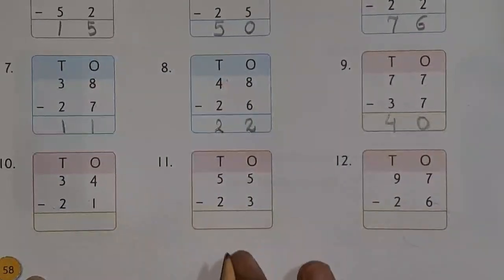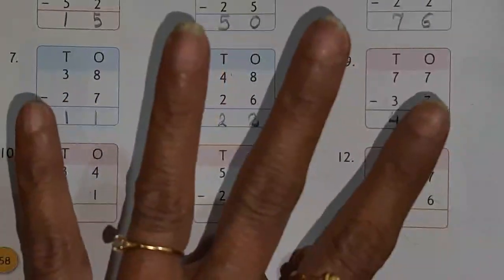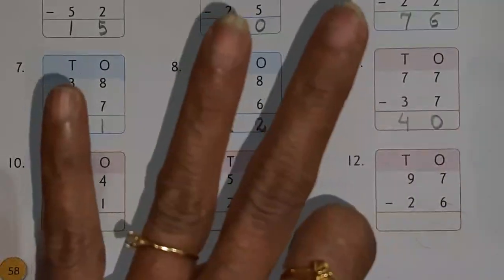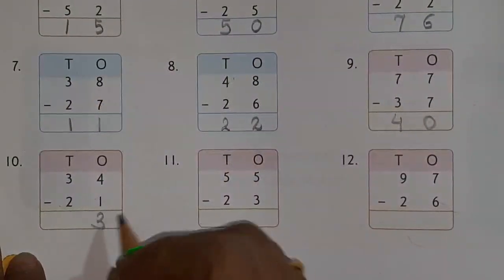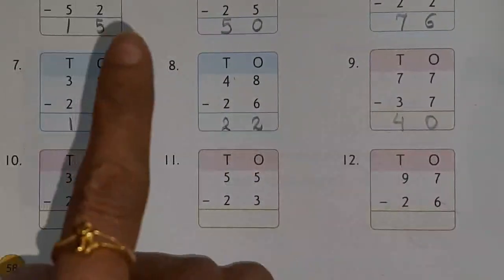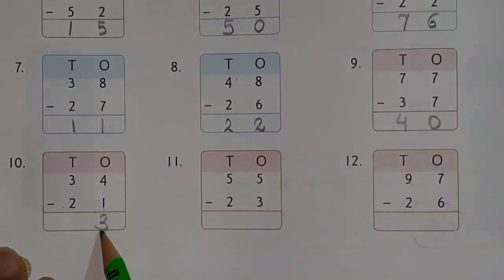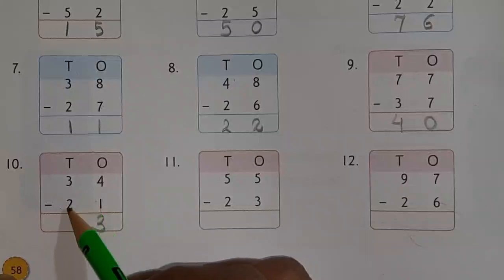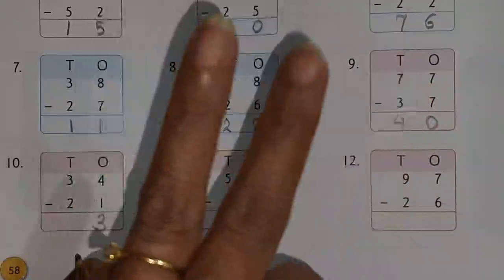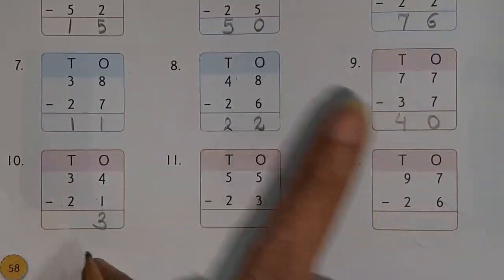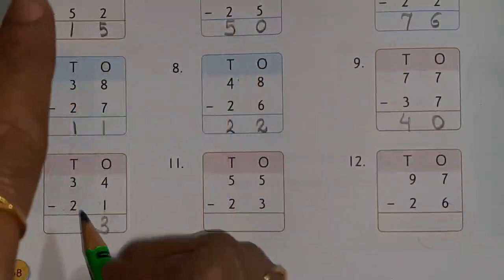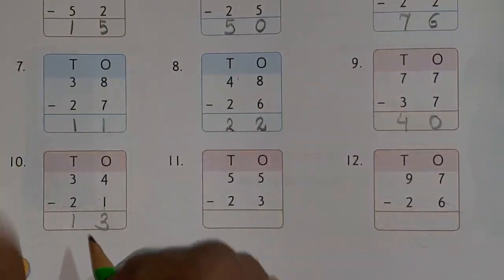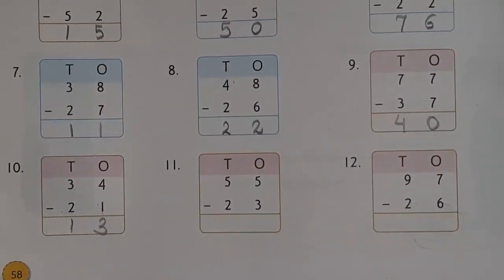Next one: 4 minus 1 — open 4 fingers, cut 1, answer is 3. Or you can count after 1 — 2, 3, 4 — again 3 fingers, answer is 3. Next: 3 minus 2 — open 3 fingers, cut 2, answer is 1. Or after 2 count till 3 — that is 1. In both ways the answer comes the same, so you can try any trick.